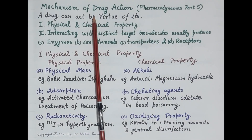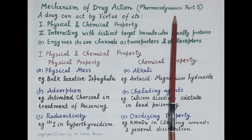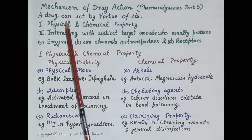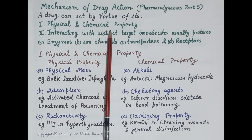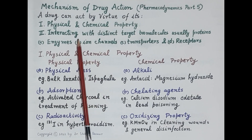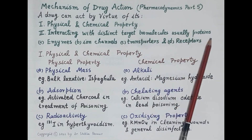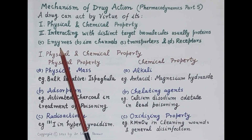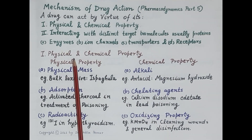Hello students. In today's video we are going to study the mechanism of drug action — that is, how a drug produces its action in the body. This video is fifth in the series on pharmacodynamics. A few drugs can act by virtue of their physical and chemical properties, but the majority of drugs produce their action by interacting with distinct target biomolecules, usually proteins: enzymes, ion channels, transporters, and receptors.